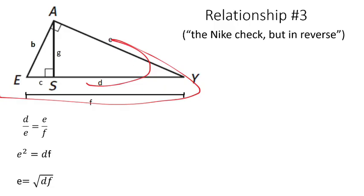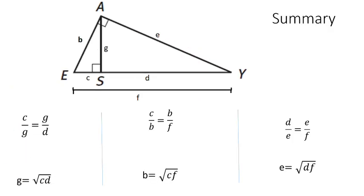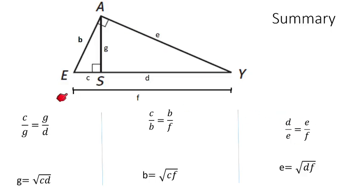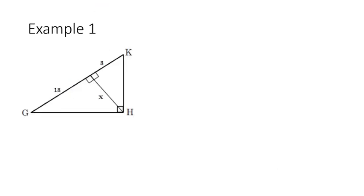Now that we've established these proportions that lead to the geometric mean relationship, here's a summary slide. You've got your heartbeat: C over G equals G over D. You've got your Nike check: C over B equals B over F. And then your reverse Nike check: D over E equals E over F. Now let's do two example problems.